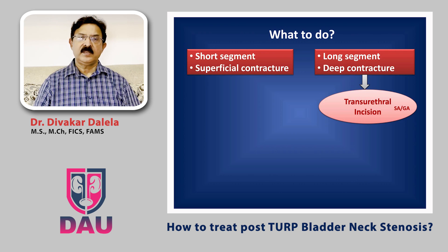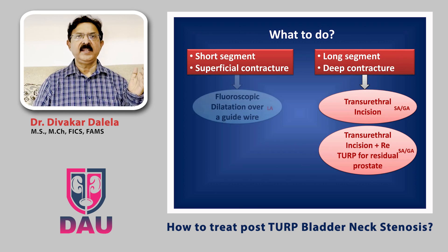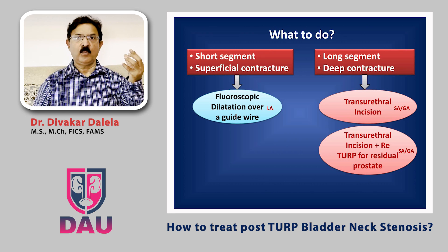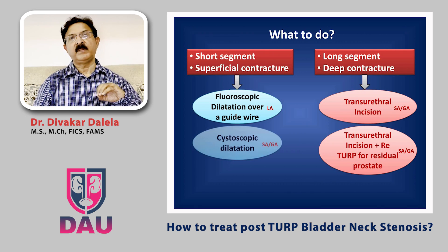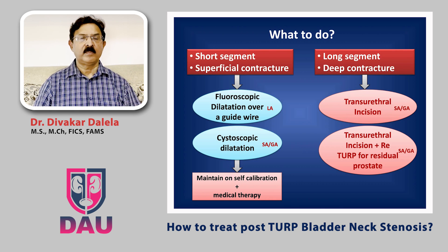The latter group, which is more serious, requires transurethral incision under anesthesia. And if the patient has residual apical tissue also, along with the incision, do a repeat transurethral resection of residual prostate. But if the patient has the simpler variety — short segment, diaphragm-like bladder stenosis — and the patient comes very early, you can do a fluoroscopic dilatation of that narrow bladder neck over a guidewire under local anesthesia, or you can do a cystoscopic dilatation. After cystoscopic dilatation, these patients should be asked to do self-dilatation and thus maintain their bladder outlet normally. If the patient fails, he goes for transurethral incision or whatever the case requires.